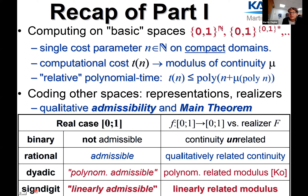We want to find a definition of polynomial admissibility that generalizes to other spaces. The signed digit representation has an even better property: a function with linear modulus of continuity has a realizer with linear modulus of continuity and vice versa. So we're looking for a notion of linear admissibility satisfied by the signed digit representation that generalizes to other spaces — that's what we're looking for, basically.